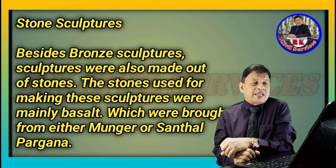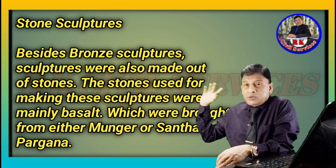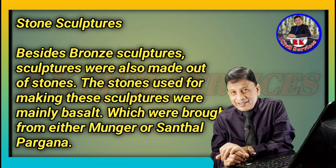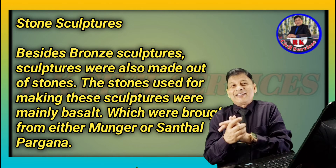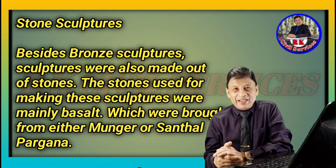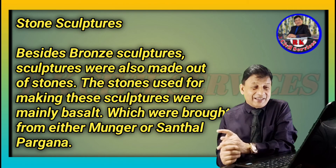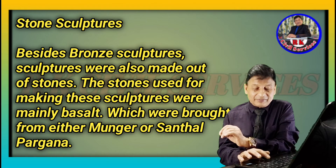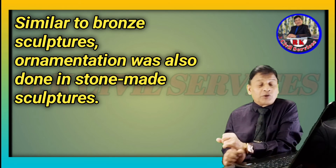Sculptures were also made of stones. The stones used for making these sculptures were mainly basalt, a very important point, which were brought from either Munger or Santhal Pargana. Similar to bronze sculptures, ornamentation was also done in stone-made sculptures.